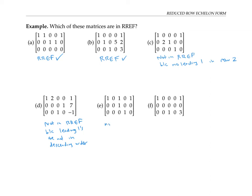Matrix E is not in reduced row echelon form. It does have leading ones and they are in descending order, but we don't always have zeros above the leading ones. In particular, this leading one has a one above it instead of a column of zeros. Finally, this last matrix is not in reduced row echelon form either — the row that's entirely zeros is supposed to go at the bottom, but it doesn't.